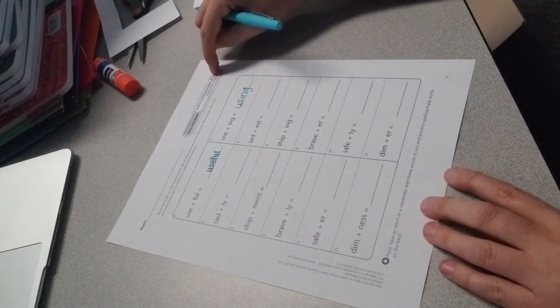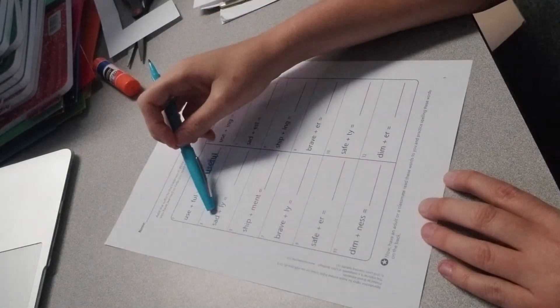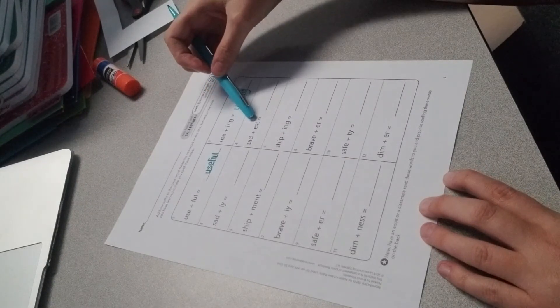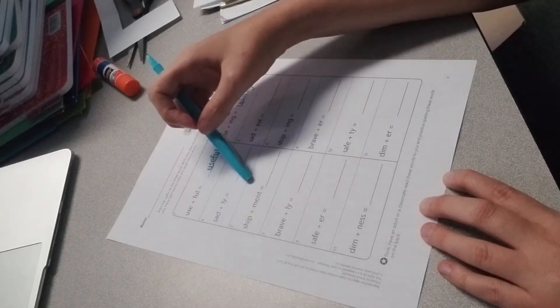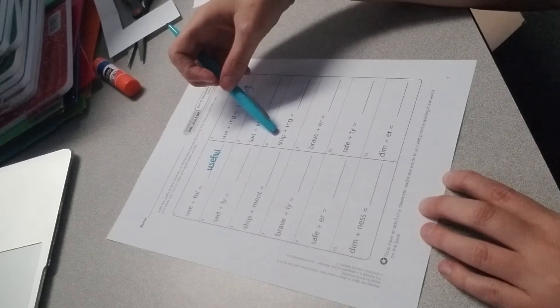Go ahead and do this for the rest of the words. You have sad, we want to make it sadly. Sad, we want to make it saddest. Ship, we want to make it shipment. Ship, we want to make it shipping.